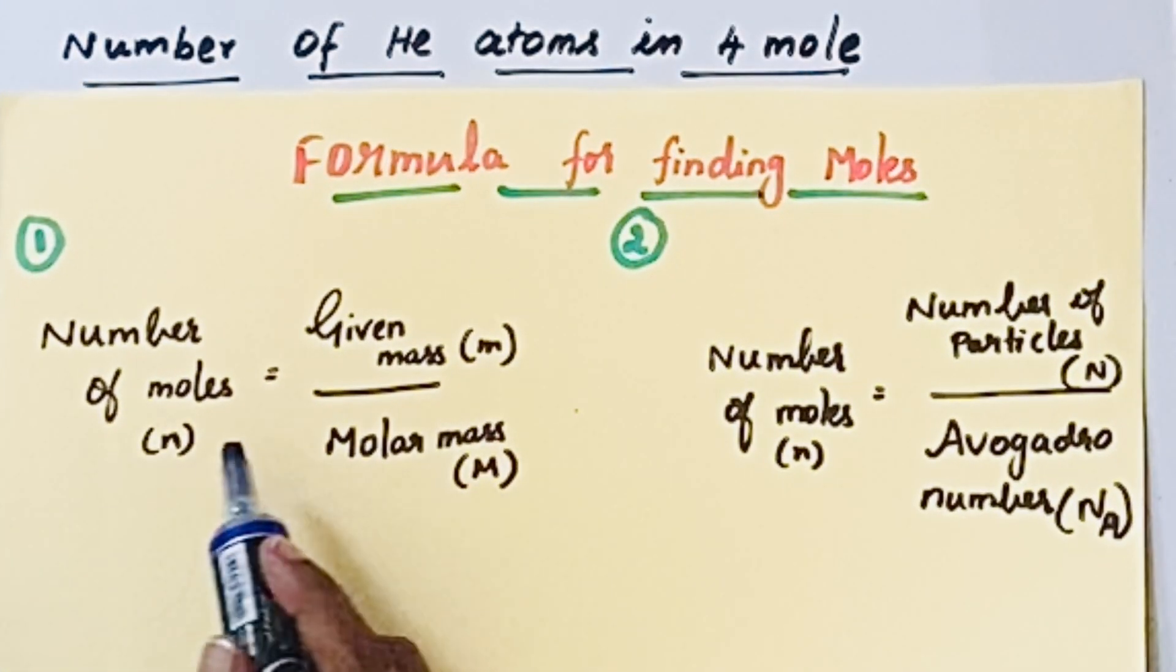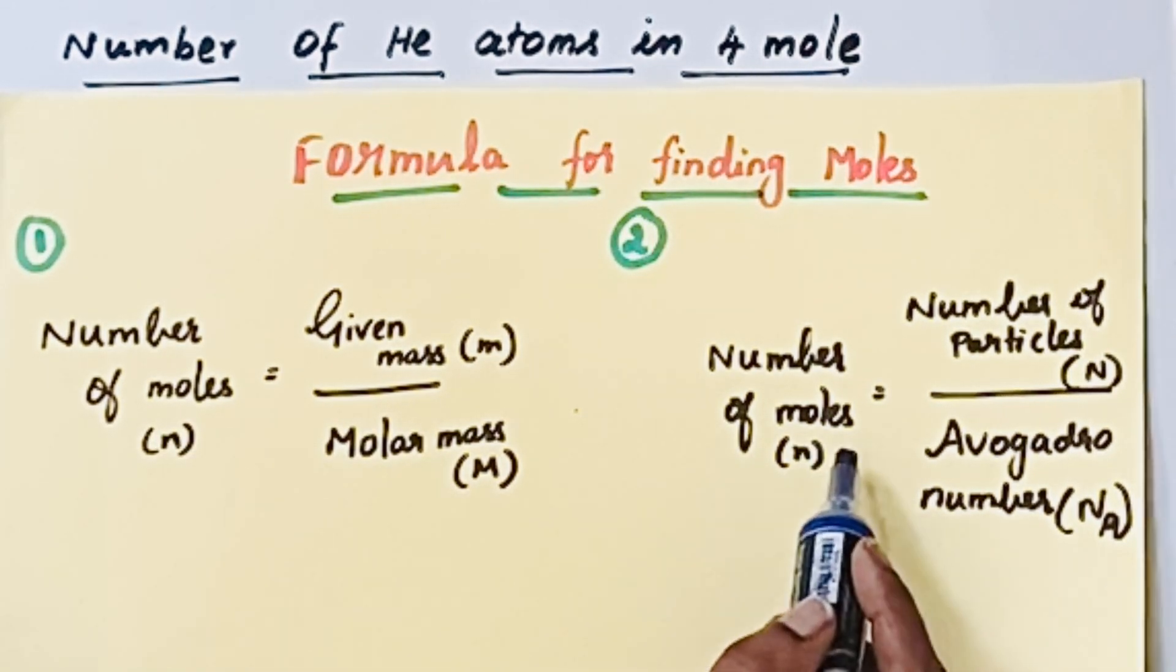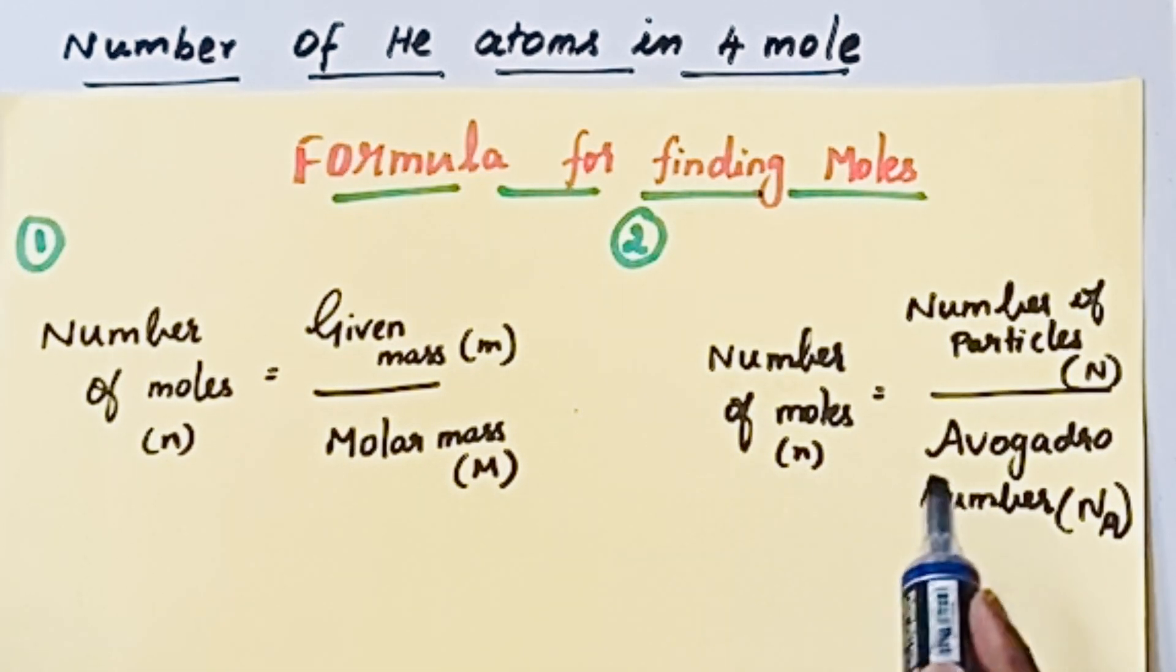So here is the formula: number of moles (n) is equal to given mass (m) divided by molar mass (M). Number of moles is also equal to number of particles (N) divided by Avogadro's number (NA).